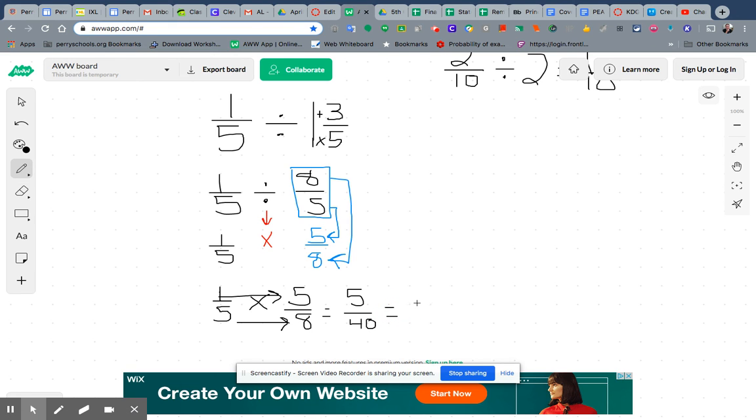Okay, so now I'm going to reduce. Five goes into – all right, five one time. Five divided by five is one. Forty divided by five is eight. And I have a simplified answer of one-eighth.